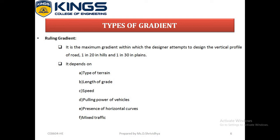The first type is ruling gradient. The gradient usually adopted while making the road alignment is called the ruling gradient. It is the maximum gradient within which the designer attempts to design the vertical profile of a road. It is also known as design gradient. It mainly depends on the type of terrain, length of grade, speed, pulling power of vehicles, presence of horizontal curves, and mixed traffic.